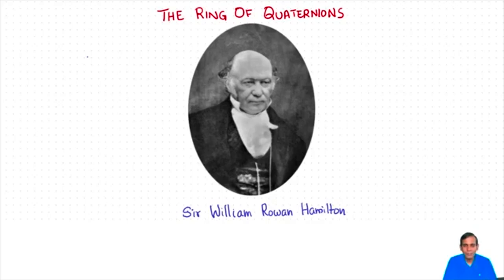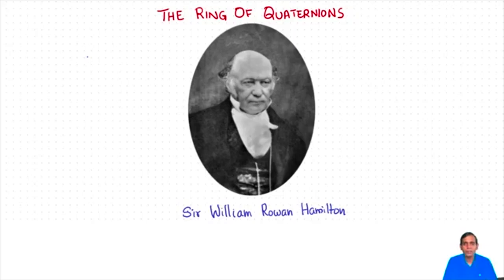In the time of Hamilton, we already knew about the complex numbers. This gave a way of multiplying pairs of real numbers. You could think of a complex number as a pair a, b — written as a plus b times i. Using the rule i squared equals minus 1, you could multiply such pairs. What Hamilton was trying to do was find a way to multiply triples of real numbers — trying to write a triple as a plus bi plus cj.